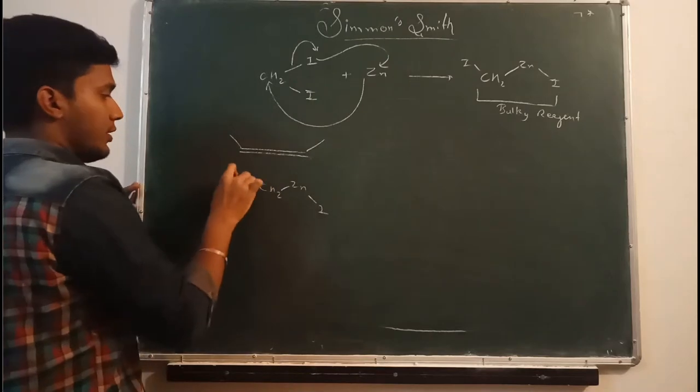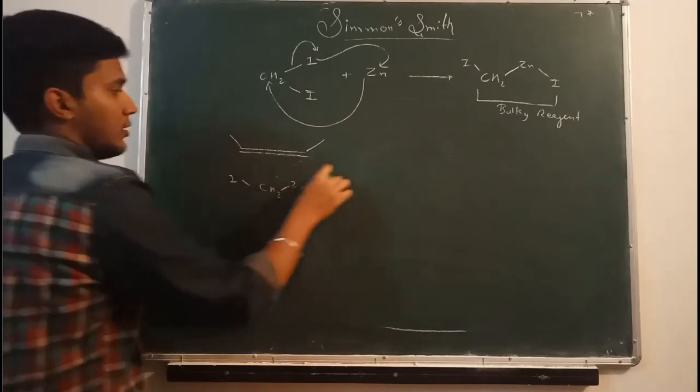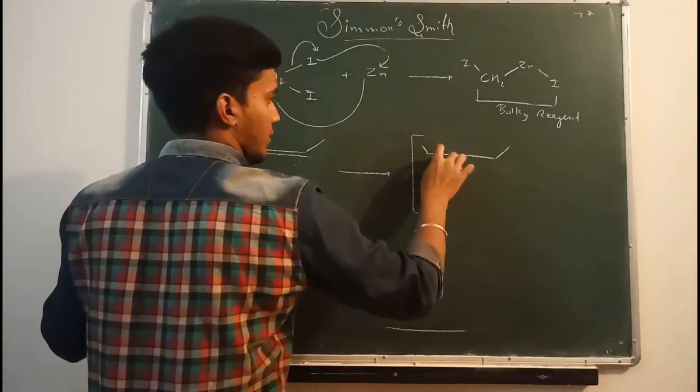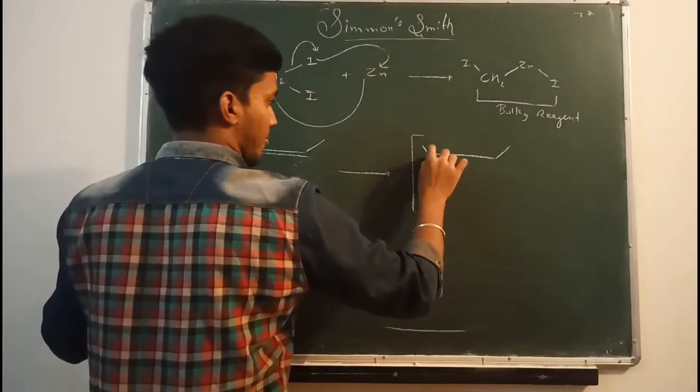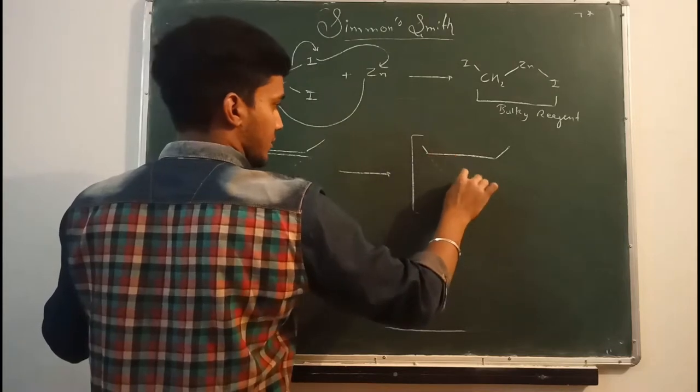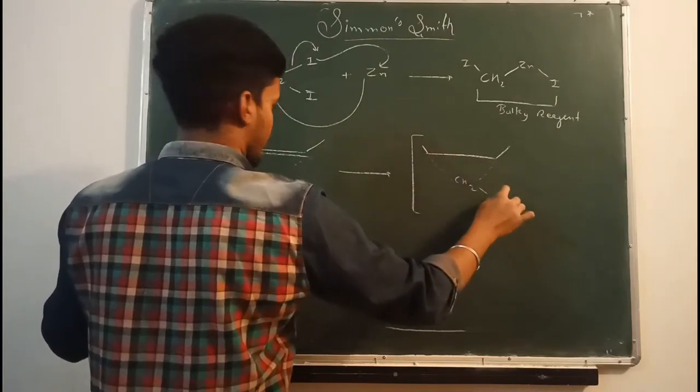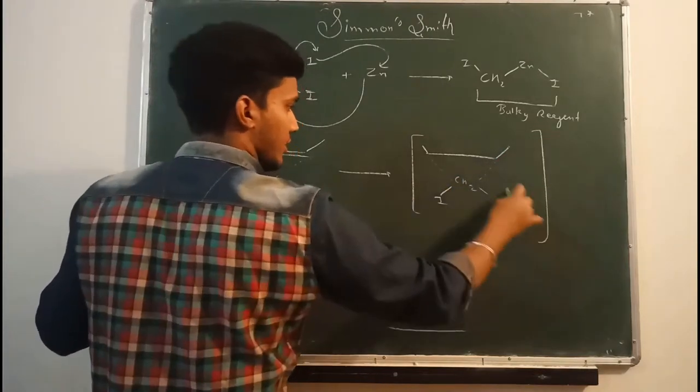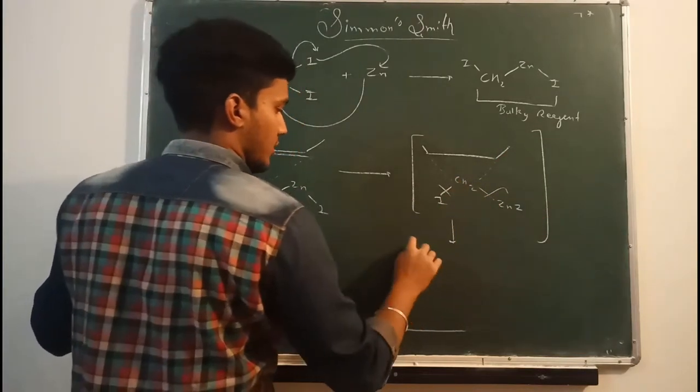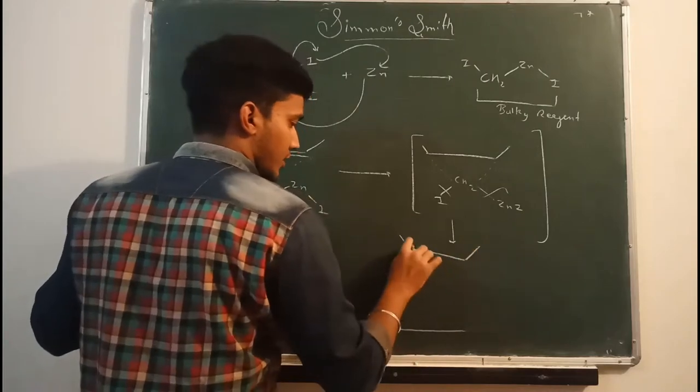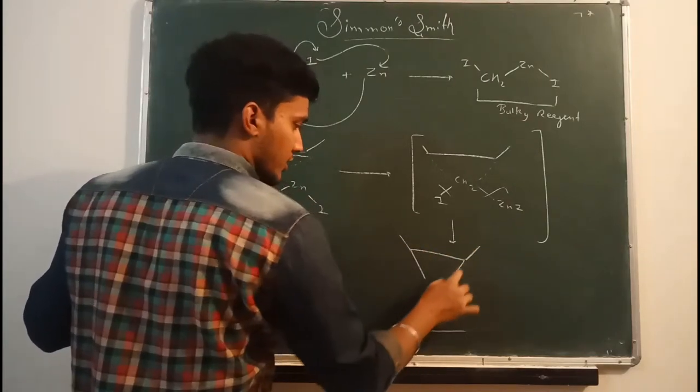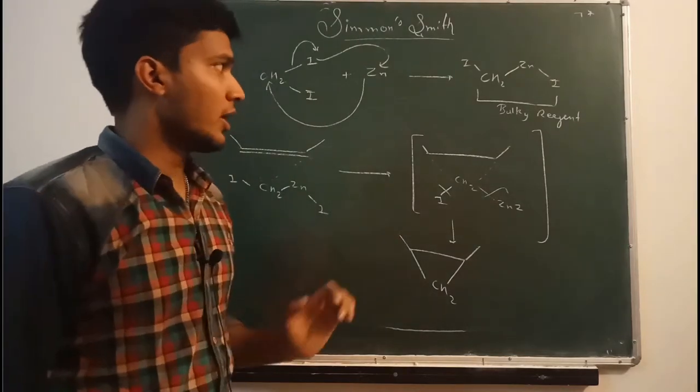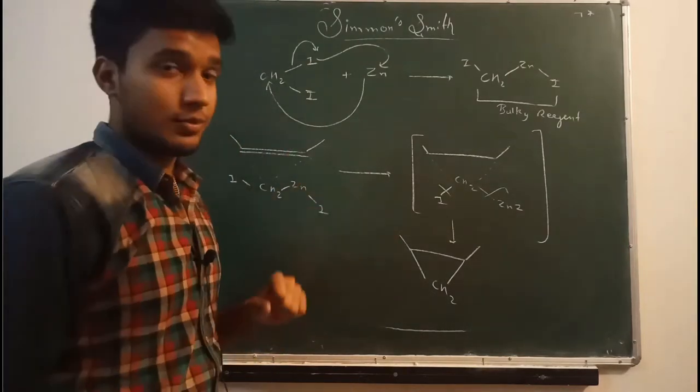First of all, it will make an intermediate which will look like this. And after that, if you see from here, alkene converted into the cyclopropane. Alkene converted into the cyclopropane. This is the basic mechanism of Simmons-Smith reaction.